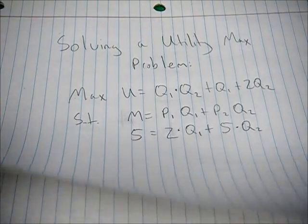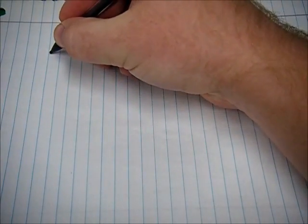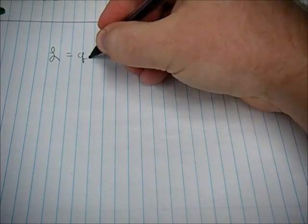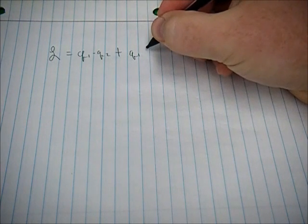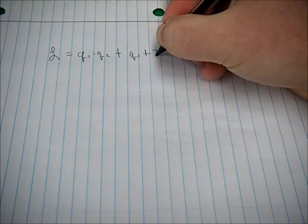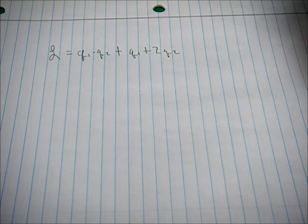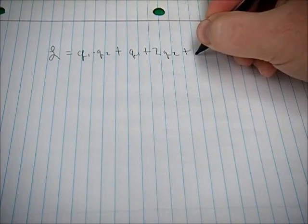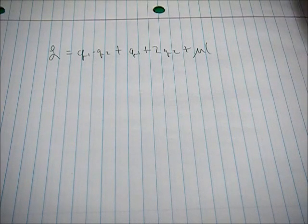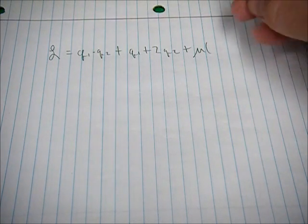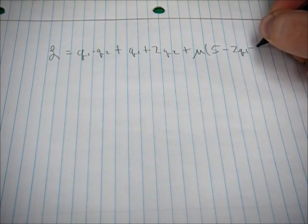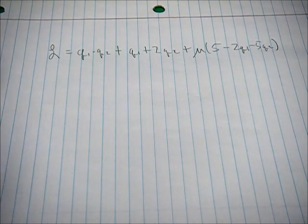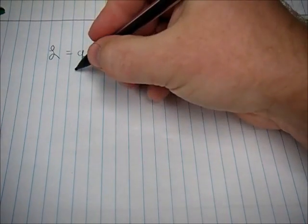Now we set up our Lagrangian for the calculus derivation. The Lagrangian is q1 times q2 plus q1 plus 2q2 — from our utility function — plus mu, our Lagrangian multiplier, times the constraint: five minus 2q1 minus 5q2.